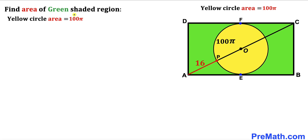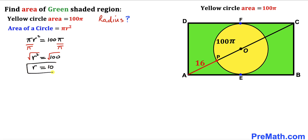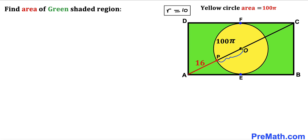We know the area of the yellow circle is 100π, and we want to find its radius. Recalling the area of a circle formula, area equals πr². Setting πr² equal to 100π and dividing both sides by π gives r² = 100. Taking the square root, the radius r is 10 units. So the radius OP is 10 units.